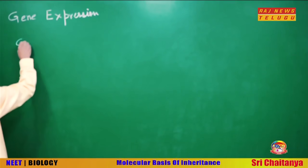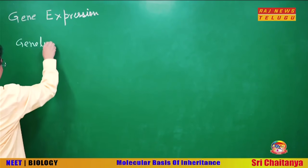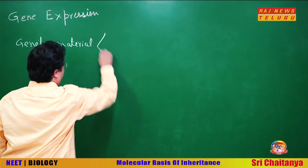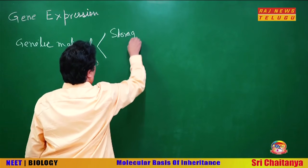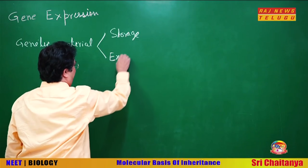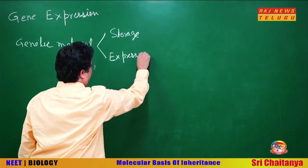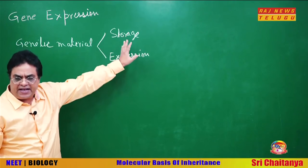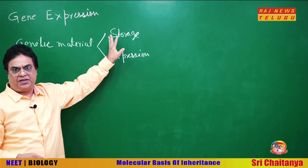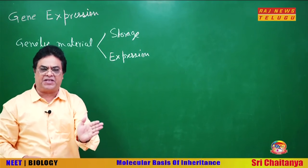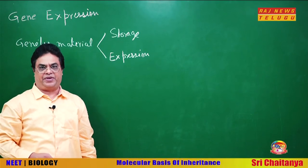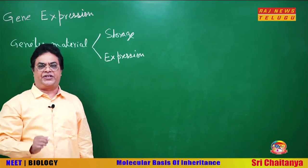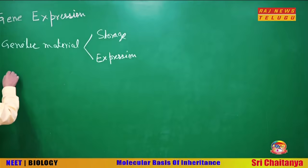Now, regarding gene expression — remember there are two main properties of genetic material: first is storage of genetic information, and second is expression of genetic information. Genetic information is stored in DNA because DNA is a highly stable molecule. But this genetic information has to be expressed so that a particular phenotype will appear.